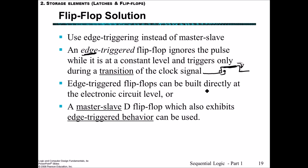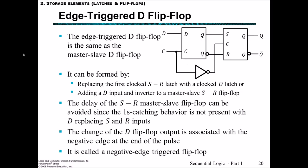We can build edge-triggered flip-flops directly at the circuit level, or we can have a master-slave D flip-flop which also exhibits edge-triggered behavior. The edge-triggered D flip-flop is the same as the master-slave D flip-flop, and it can be formed by replacing the SR latch with a clocked D latch, or by adding a D input and an inverter to the master-slave SR flip-flop. The delay issue of one's catching is avoided since D replaces the S and R inputs. The change of the D flip-flop output is associated with a negative edge at the end of the pulse — this is called a negative edge-triggered flip-flop.